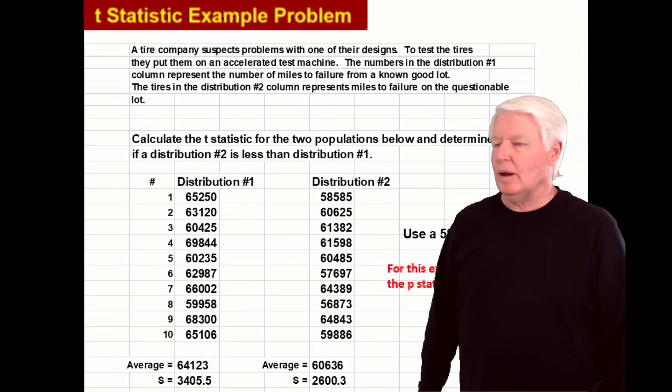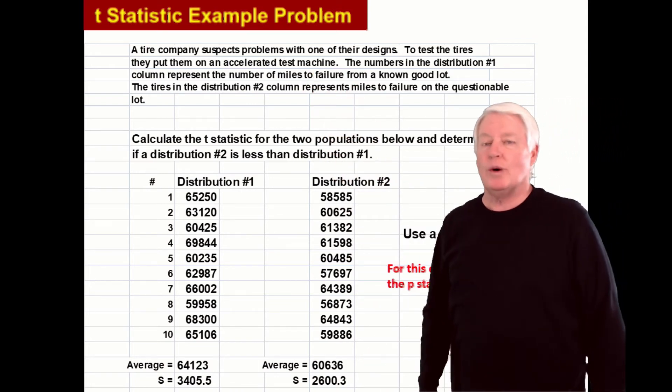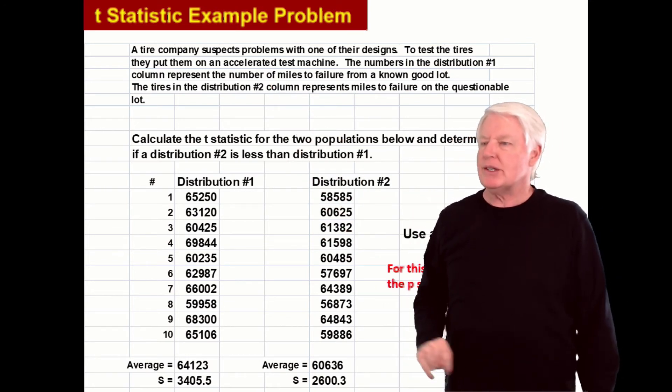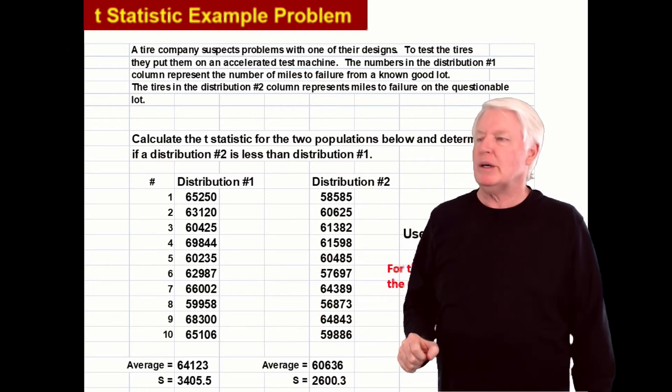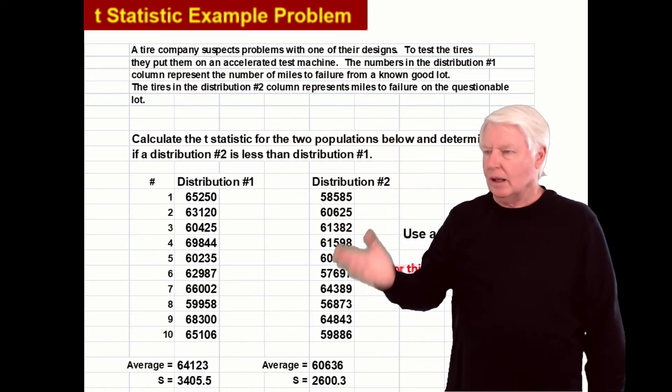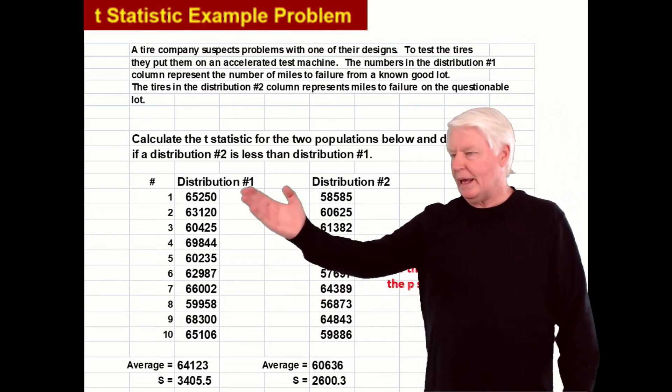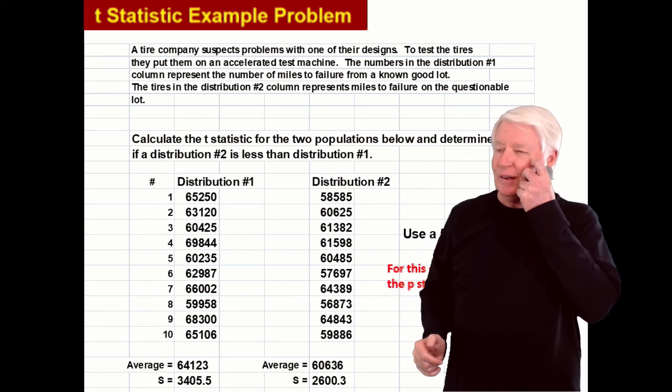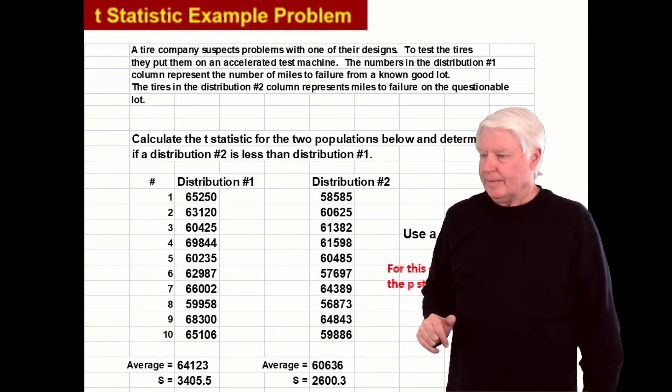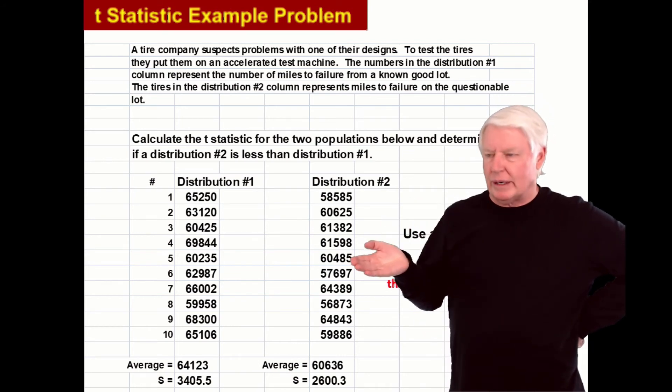Here's an example of a T statistic. A tire company suspects problems with one of their designs. To test the tires they put them on an accelerated test machine. The numbers in distribution one column represent the number of miles to failure from a known good lot. The tires in distribution two column represents miles to failure on the questionable lot. We have ten in each one, so a total of 20, which lies right in the T statistic.